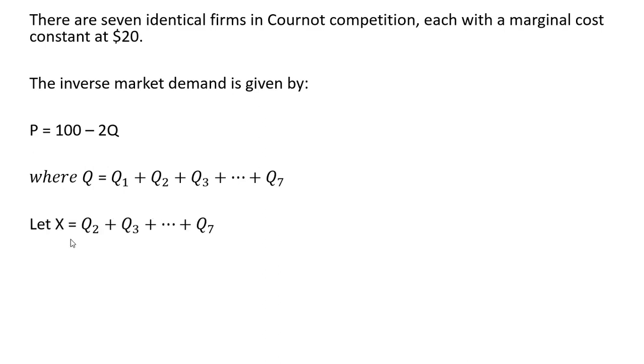Let's define X. X is going to represent the output of the six other firms. So X is the output of firm 2 through firm 7, and notice that we're excluding the output of firm 1 from X. So X is the output of the other six firms in this seven-firm Cournot model.